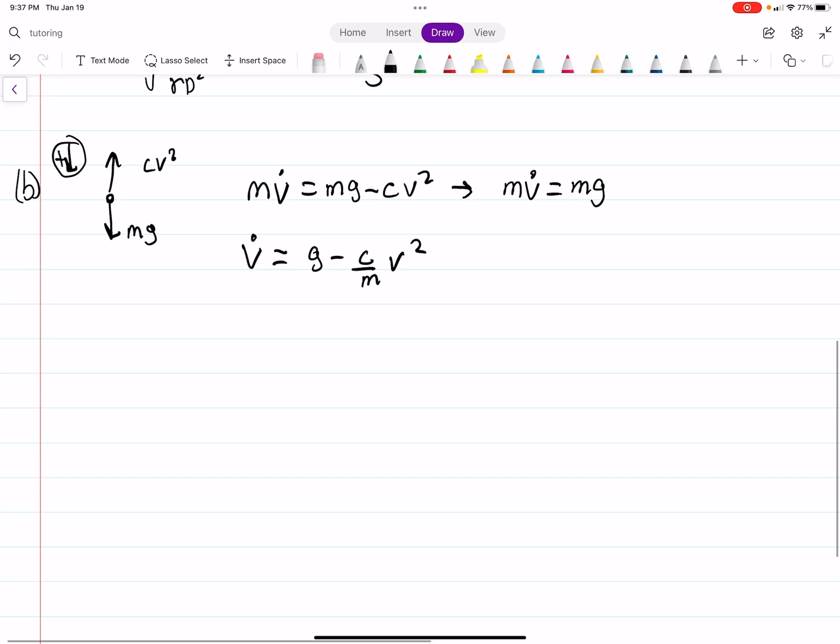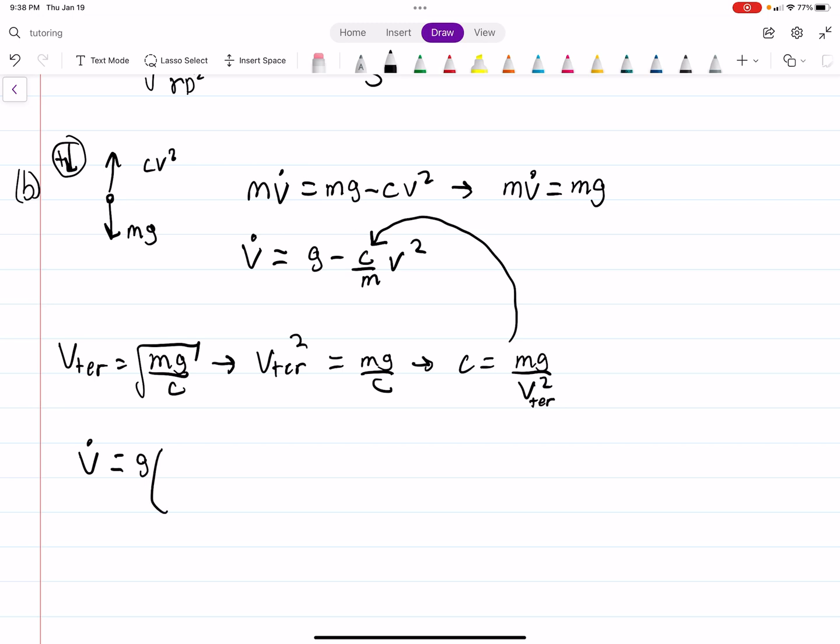And if we want to write this in terms of the terminal velocity, the terminal we said was the square root of MG over C, right? So if we solve for the variable C, you square both sides, equal to MG over C. So C is equal to MG over the terminal velocity squared. And you can plug that into here. So once we plug that into here, the masses cancel, and then we can factor out a G, and what we get is V dot equals G times 1 minus V squared over the terminal velocity squared.